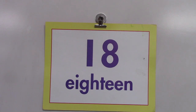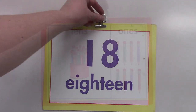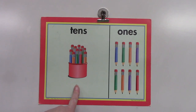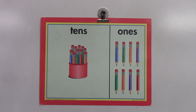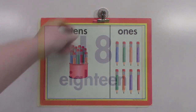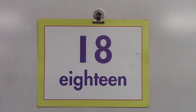There are two digits in the number 18: the 1 and the 8. What does the 1 tell us? That's right, it tells us that there is one group of 10 in this number. In the 10s column, we have one group of 10, and in the 1s column, we have 8 pencils. We can count this together as 10, 11, 12, 13, 14, 15, 16, 17, 18. Is 18 an even number or an odd number? That's right, it's an even number because it ends with the number 8.